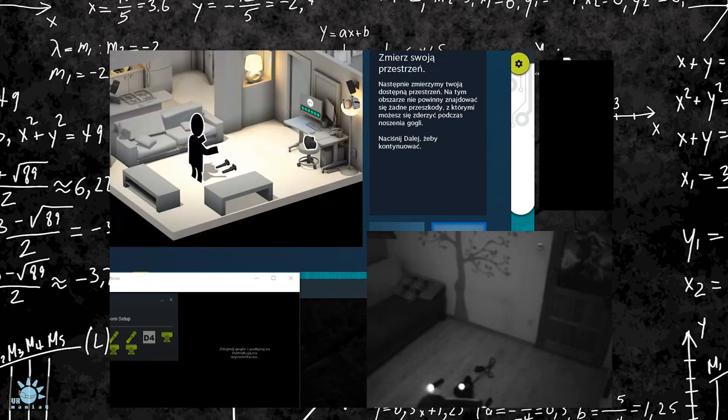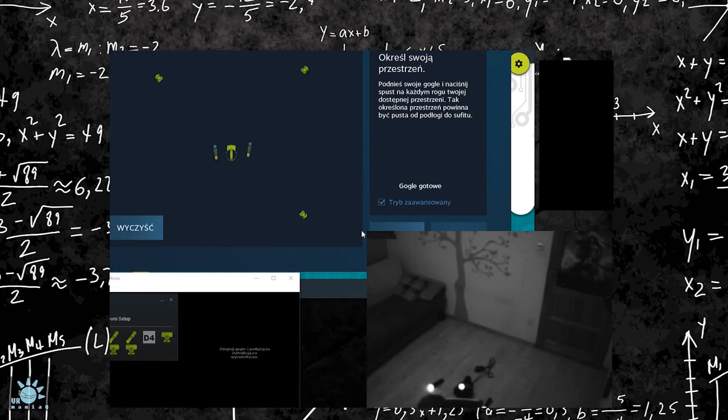Now when you make your room setup, make sure you tap your play space boundary in advanced mode near the cameras.